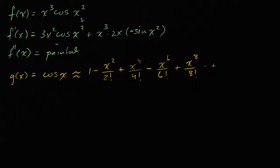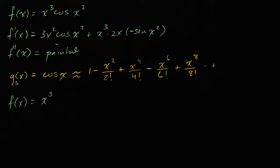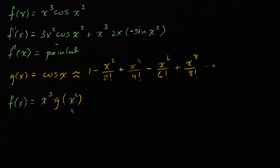Let me rewrite. I told you that f of x, if we want to construct it using g of x, we can rewrite it as x to the third times g of x squared — because g of x is cosine, so g of x squared is cosine of x squared, multiplied by x to the third. Can't we just apply this insight to the approximation? And my answer is yes, you absolutely can. When you substitute x's with x squared, you get another polynomial. Multiply by x to the third and you get another polynomial. That polynomial will be the Maclaurin series representation of our original function.